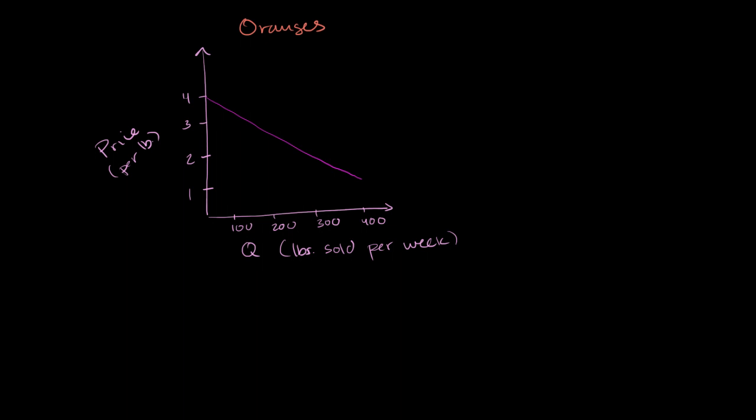Let's say you run an orange stand. And this right here, you could view this either as the demand curve for your orange stand or your marginal benefit curve, or really you could call it the willingness to pay.